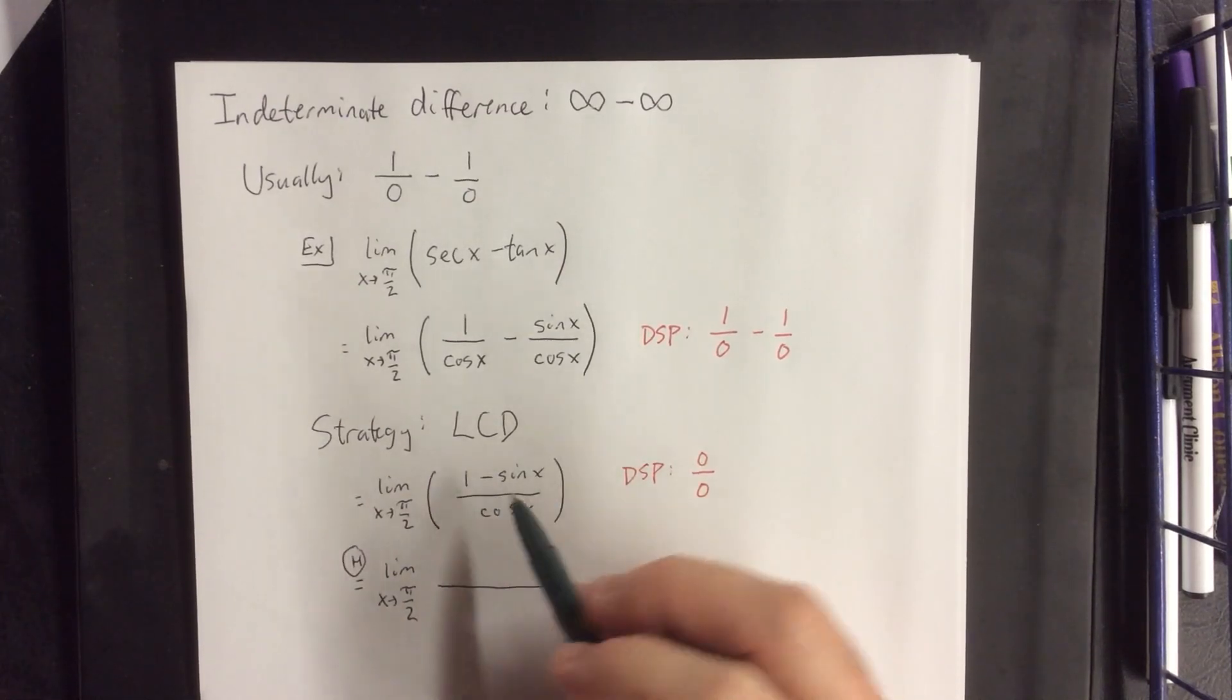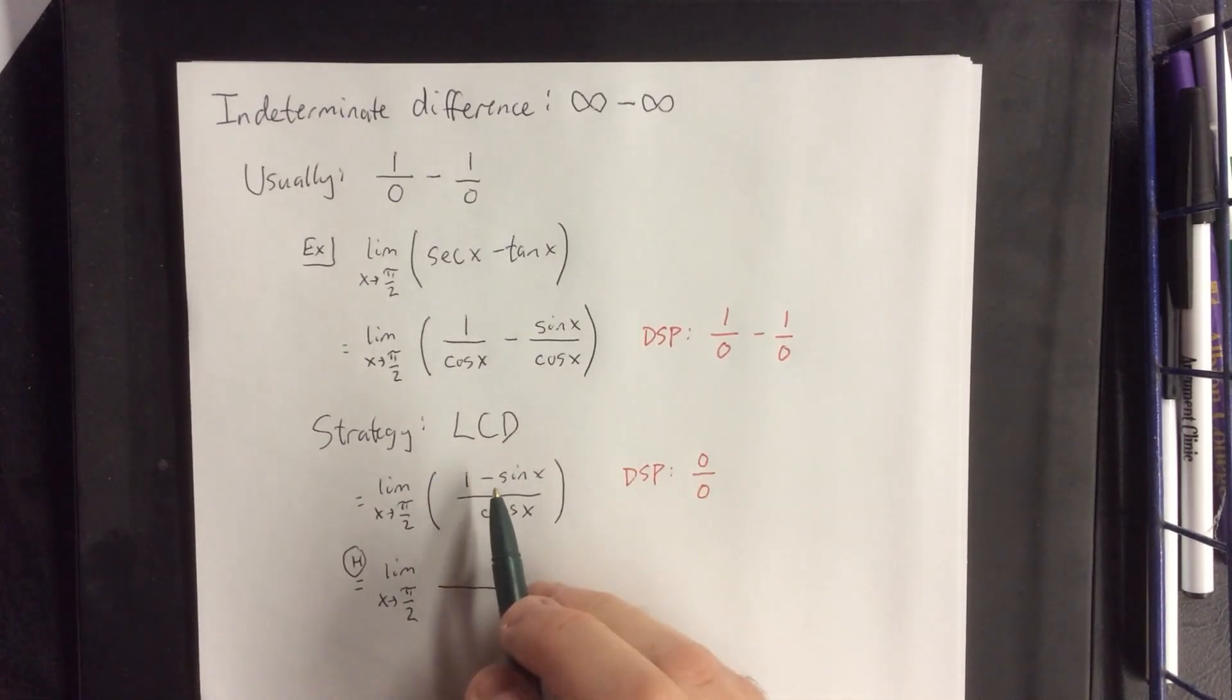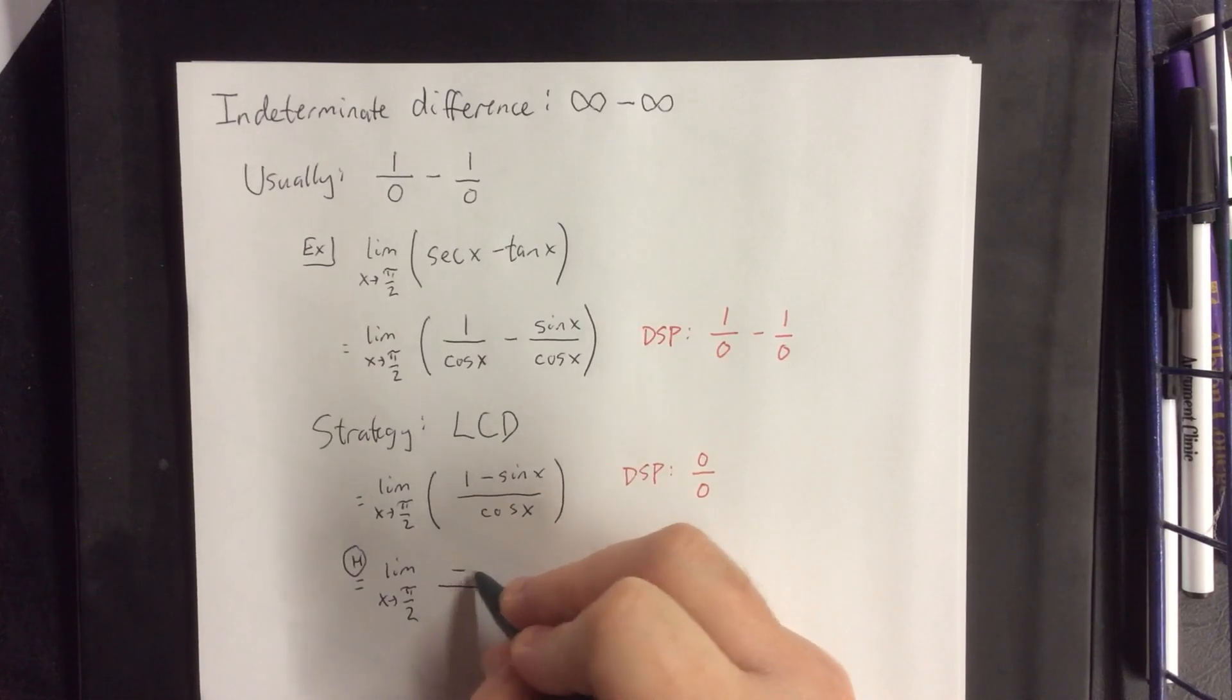The derivative of the numerator: 1 goes to 0, negative sine of x would become negative cosine of x, and cosine of x in the denominator would become the negative sine of x.